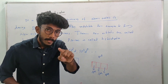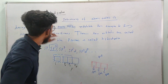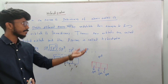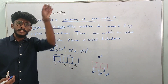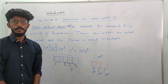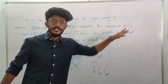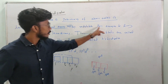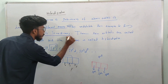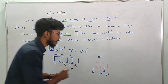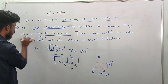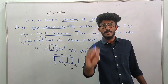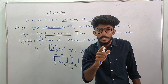Those new orbitals are called hybrid orbitals. The hybrid orbitals have the same energy. Hybridization is the process of intermixing atomic orbitals of slightly different energy; they redistribute their energies to form new orbitals of same energy — these new orbitals are called hybrid orbitals, and the process is called hybridization.